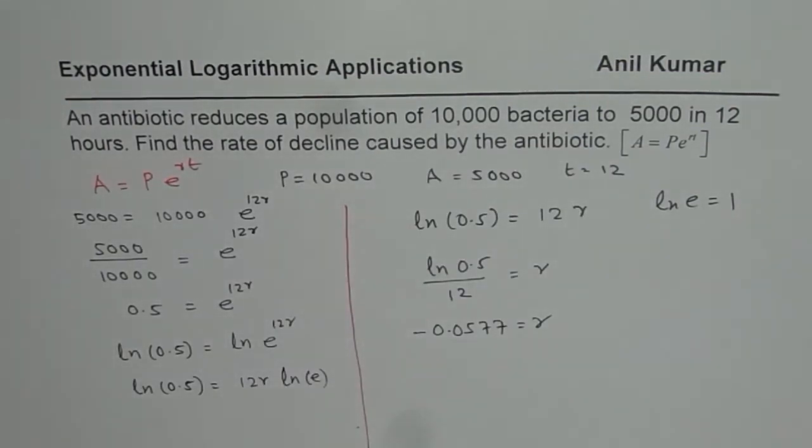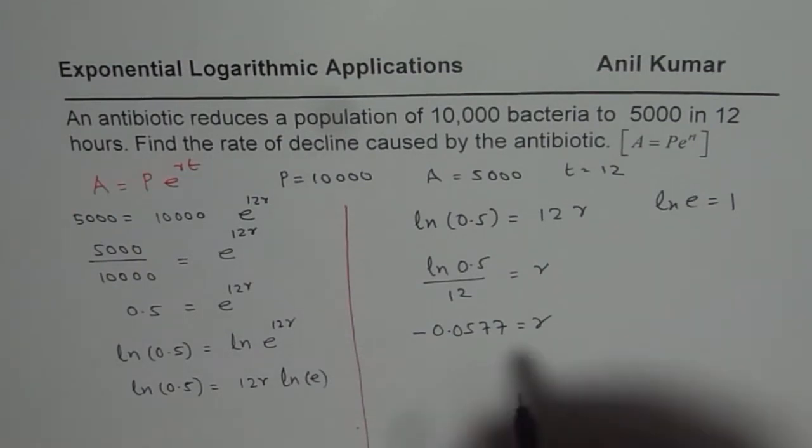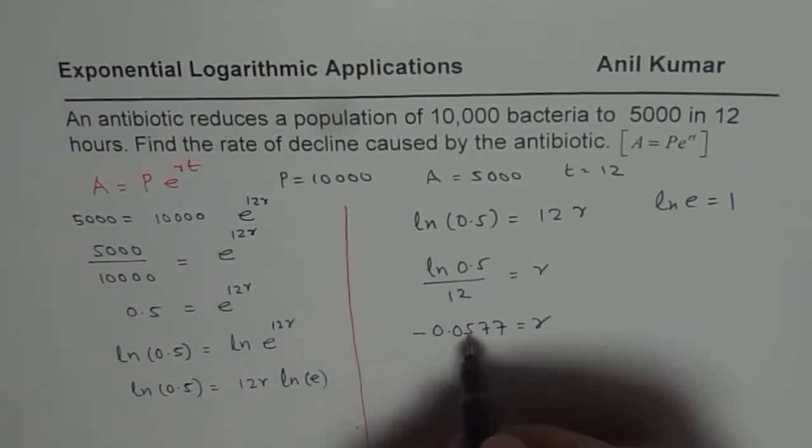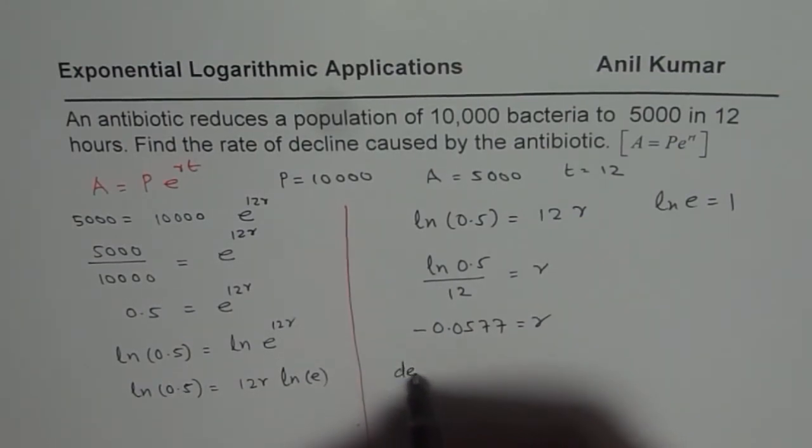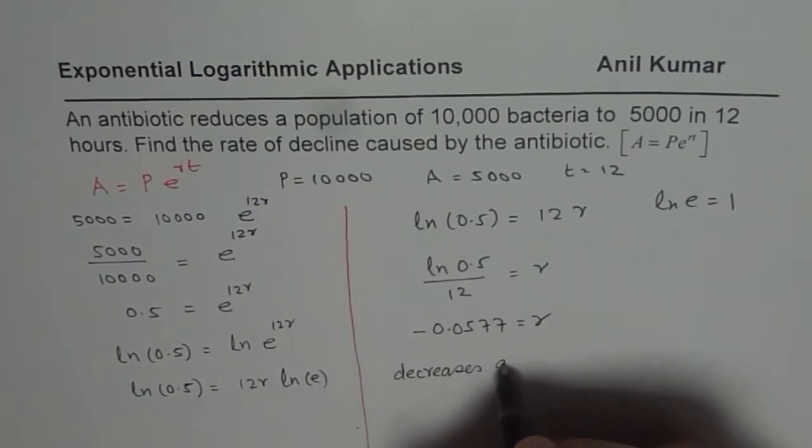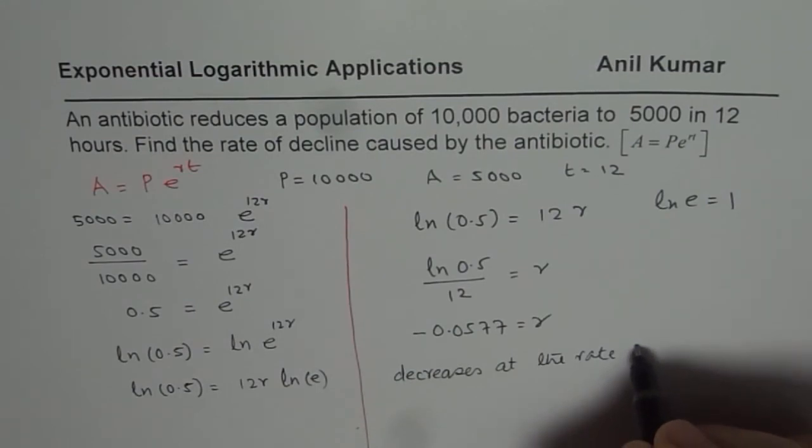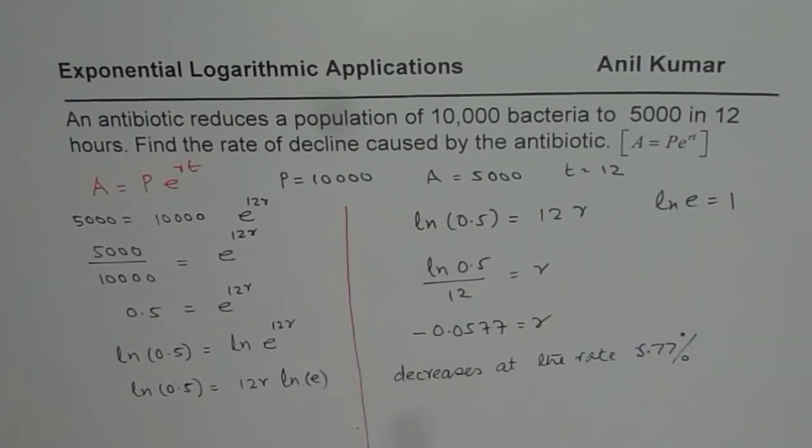R is negative, which means it is decreasing. It is customary to write it as a percent. If you write it as percent, you say it decreases at the rate of—if you multiply by 100—we could write this as 5.77 percent. That is how it is.